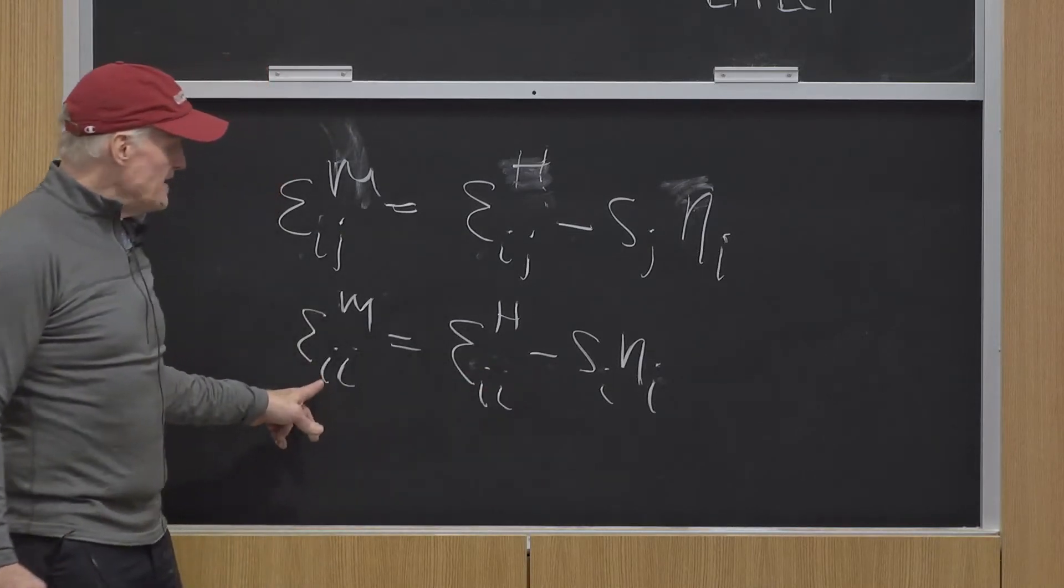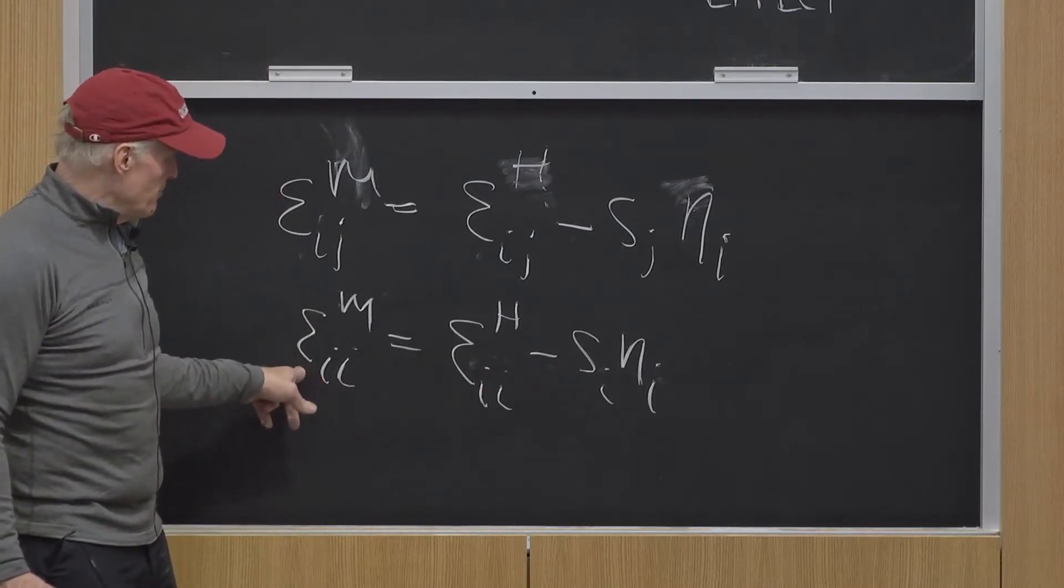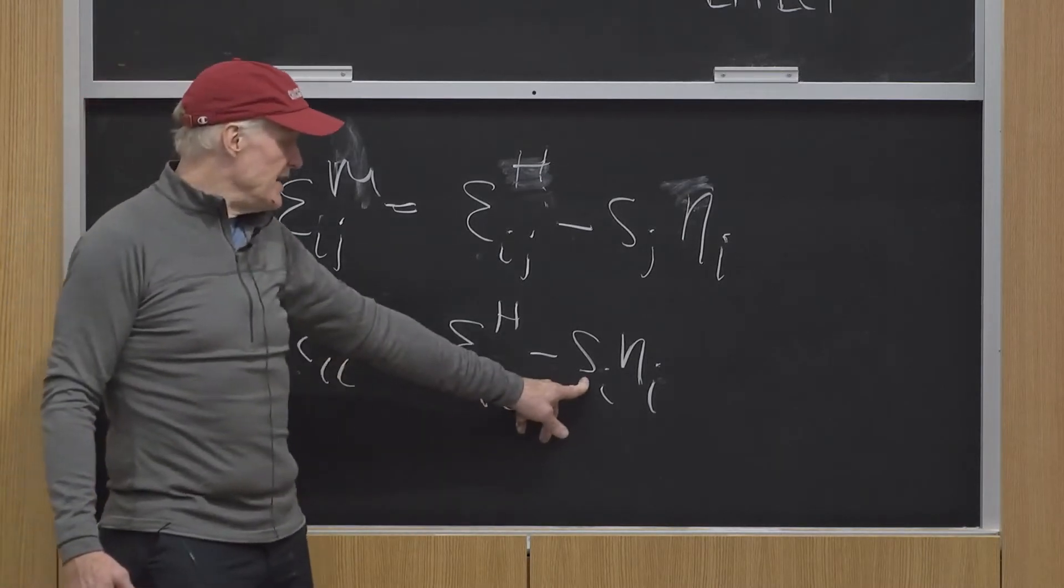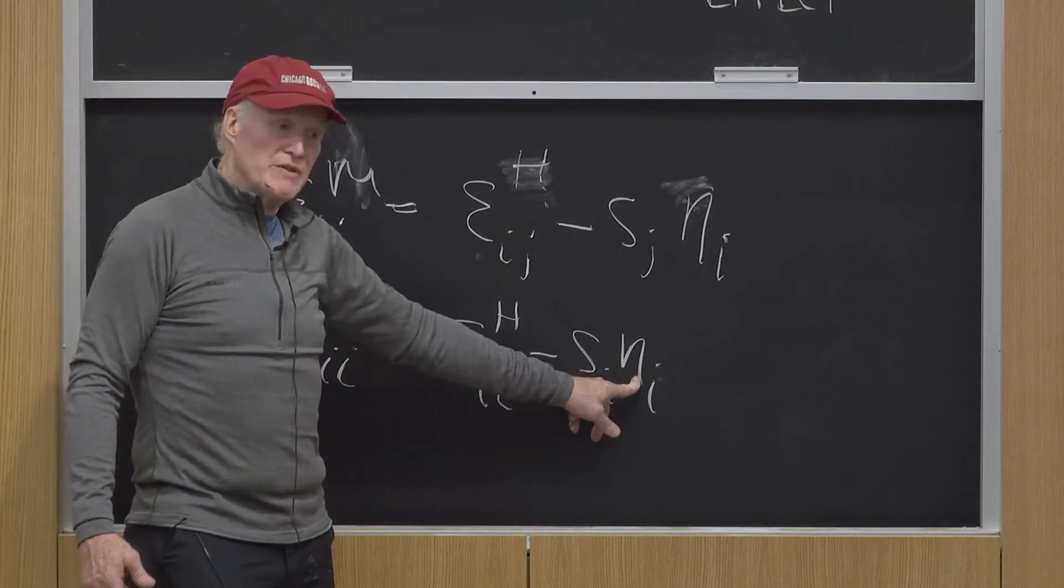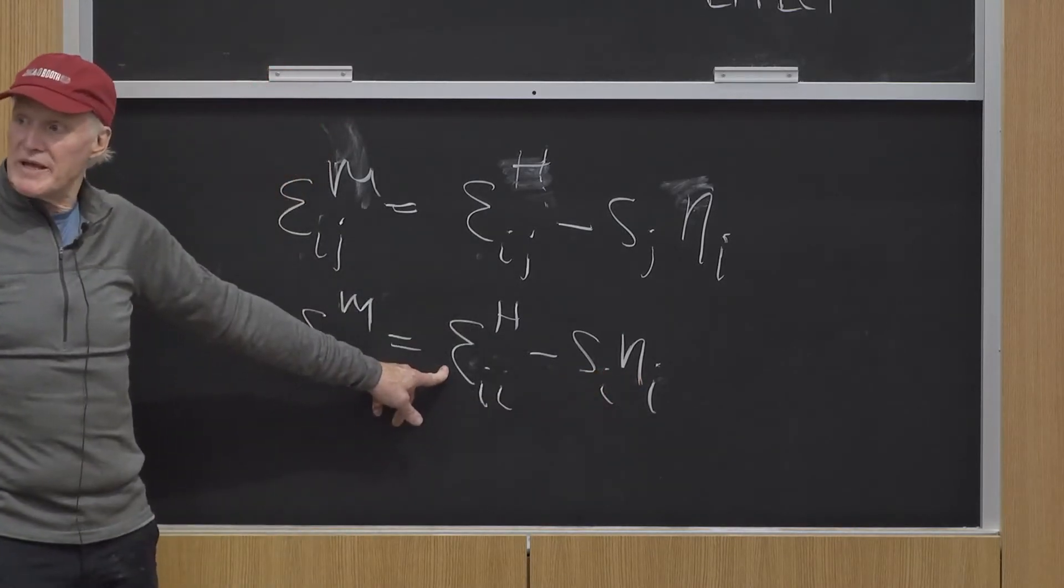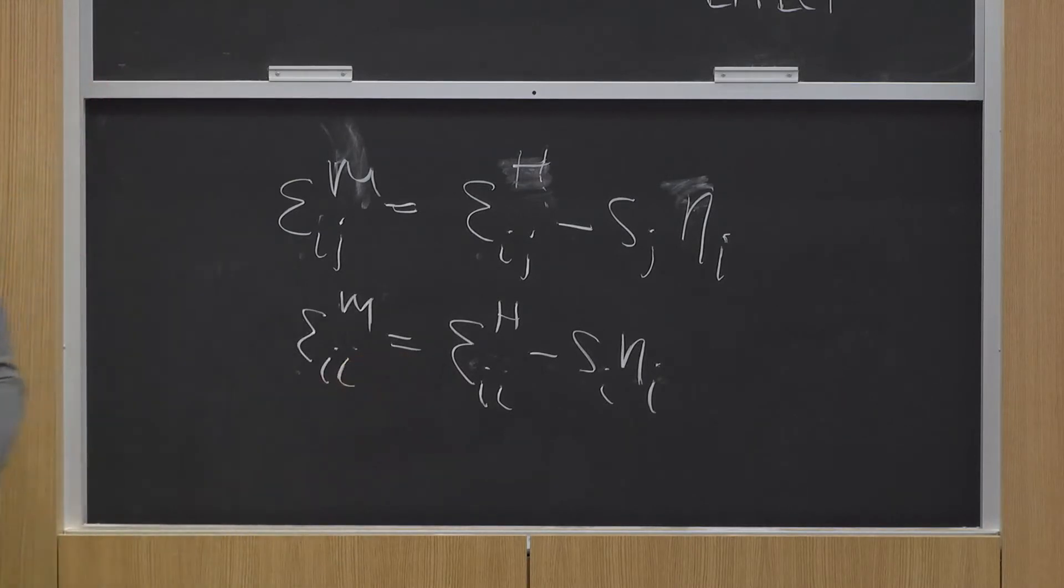Now, you could possibly violate the law of demand for the Marshallian demand curve if you had a good that had a high share and was significantly inferior and the substitution effect was sufficiently weak. This is a so-called Giffen good case.